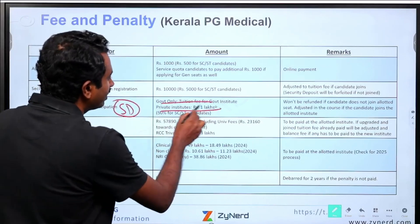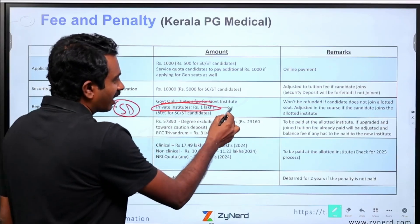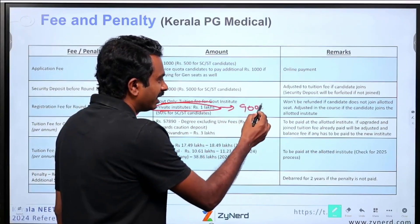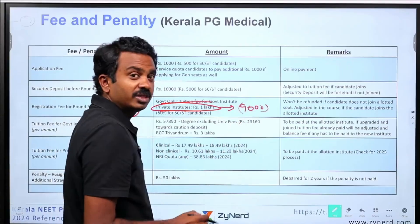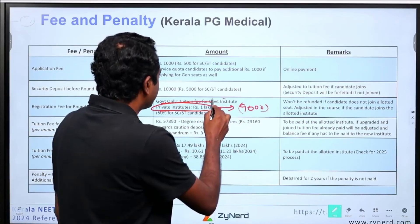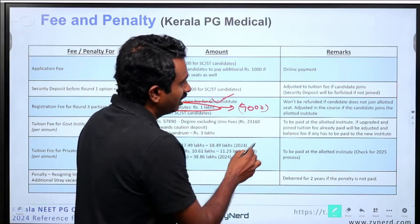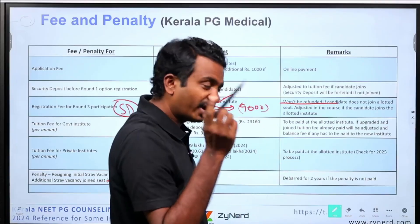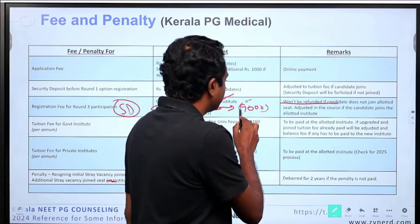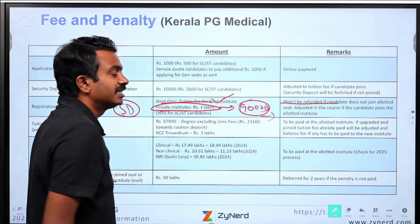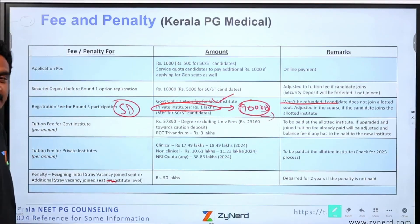Similarly, for private institutes, you will pay 1 lakh. Since you already paid 10,000, you will pay only 90,000. This amount will be lost if you do not join the seat — it will not be refunded. But if you join the seat, it will be adjusted against the tuition fee, so you do not need to pay that again.